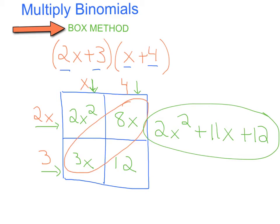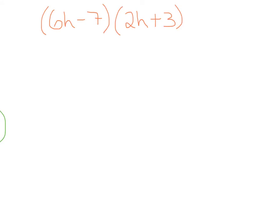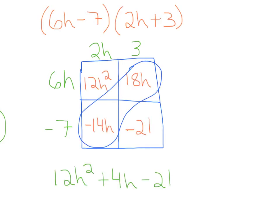Now I'm going to give you one question to try on your own using the box method. Our two binomials: 6h minus 7 times 2h plus 3. I'm going to create my 2x2 box and write 6h, and since it's minus 7, let's make sure we write negative 7, and then 2h plus 3. Pause the video and try this on your own. After you fill in the box and combine the like terms on the diagonal, you should have gotten 12h squared plus 4h minus 21.